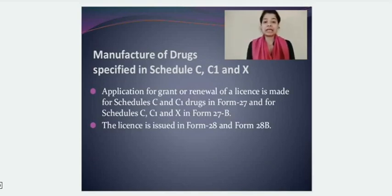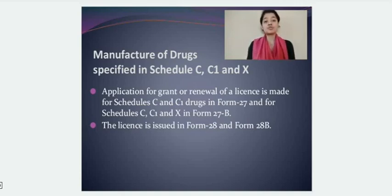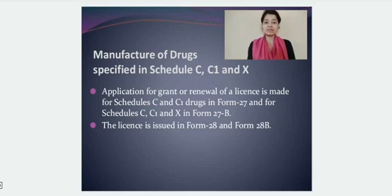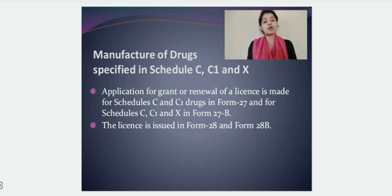We will now study the process of manufacture and how to get a license to manufacture drugs specified in Schedule C, C1 and X. If you want to manufacture a drug belonging to Schedule C or C1, you apply in Form 27, and if it belongs to Schedule C, C1 or X, you fill Form 27B. The license will be issued by the licensing authority in Form 28 for Schedule C and C1, and in Form 28B for Schedule C, C1 and X.